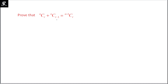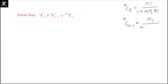nCr is equal to n factorial upon (n minus r) factorial into r factorial. nCr minus 1 is equal to n factorial upon (n minus r minus 1), so that would be (n minus r plus 1) factorial into (r minus 1) factorial.